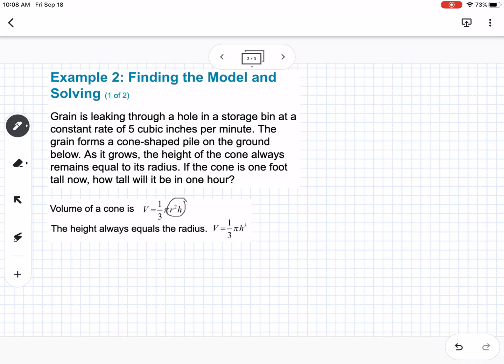So notice here we have an r squared h, but if they're equal, we can combine them and make them just one letter, which is h. So we can write it like volume equals 1/3rd pi h cubed. So the first thing we want to do is find out what the volume is to start. And then note that this is 5 cubic inches per minute. And it says the cone is 1 foot tall. So we have to be careful with units here. So I'm going to make a note that this is 12 inches.